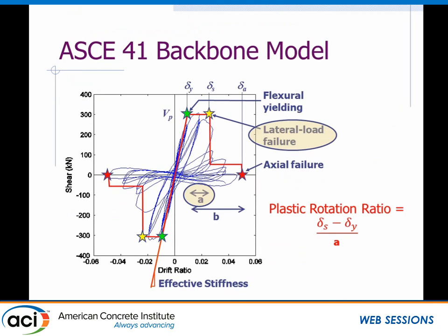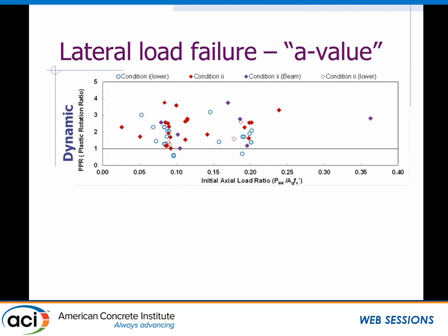Once we've classified the columns, we go into the document and select an A and B value. Let's talk first about the A value and compare it to when we see lateral load failure in the test. We compare the plastic rotation at lateral load failure from the test to the A value in ASCE 41 as a plastic rotation ratio. Focusing on condition 2 — the flexure-shear columns shown as red diamonds — it shows that ASCE 41 is fairly conservative for this dynamic database.